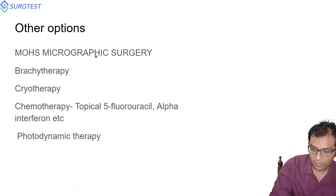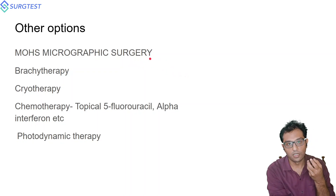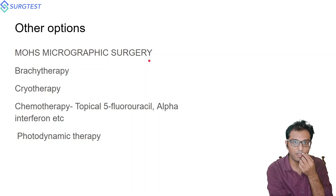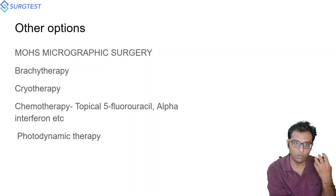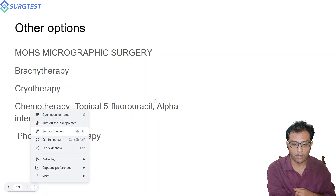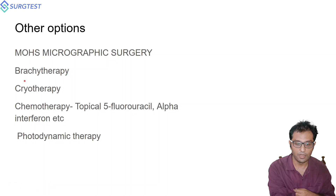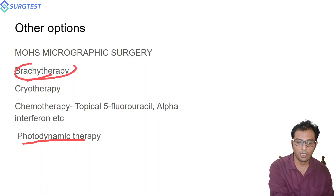Other modalities of treatment include Mohs micrographic surgery, which is used for critical areas of the head and neck — like BCC of the cheek or lip cancers — where we need to exactly define our margins. Surgery is performed under microscope with thin margins sent for frozen section; positive margins can be re-excised. Other options are brachytherapy, cryotherapy, and photodynamic therapy. The popular non-surgical modes for lip cancers are brachytherapy and photodynamic therapy.